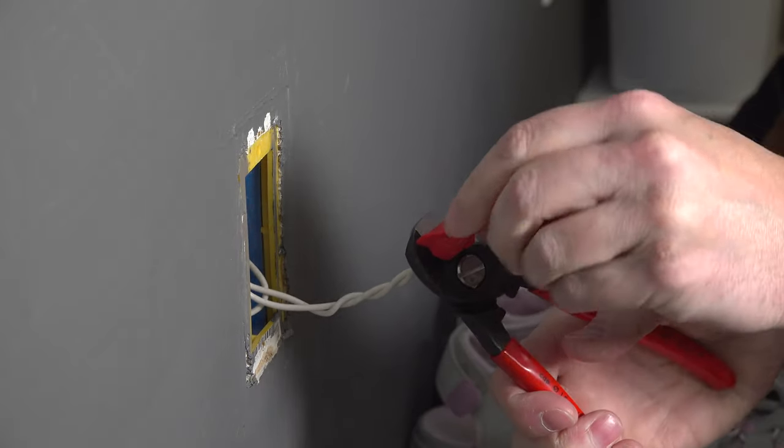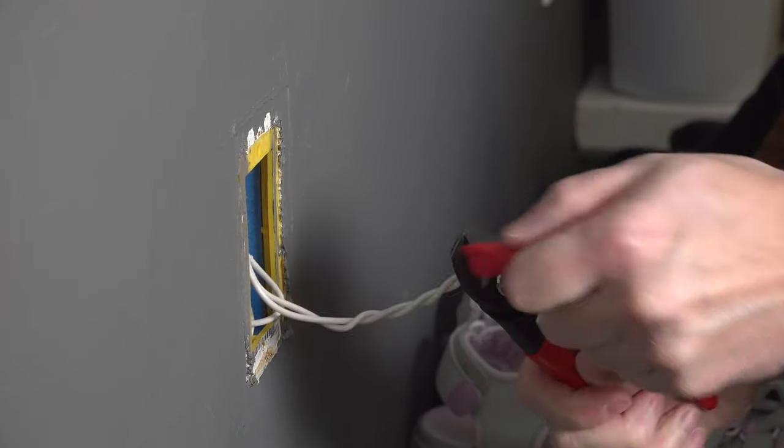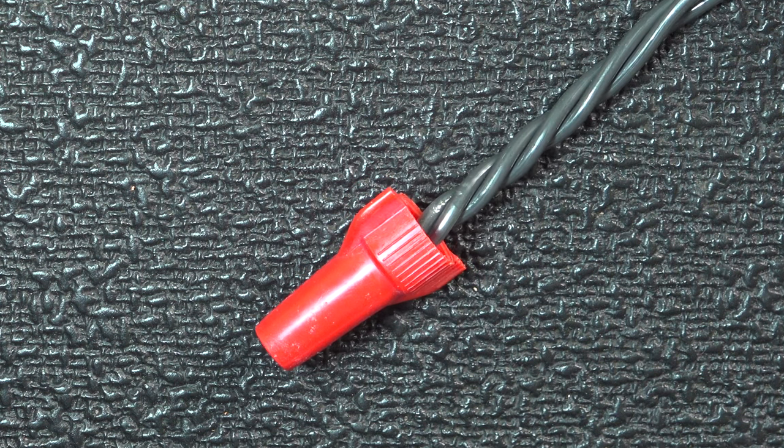So the right way to do it is to cut that section of wire off, put on a new wire nut, and then you'll have a safe and secure connection.